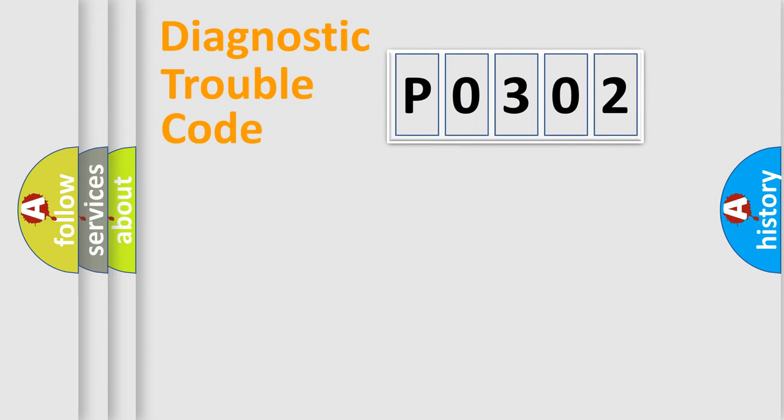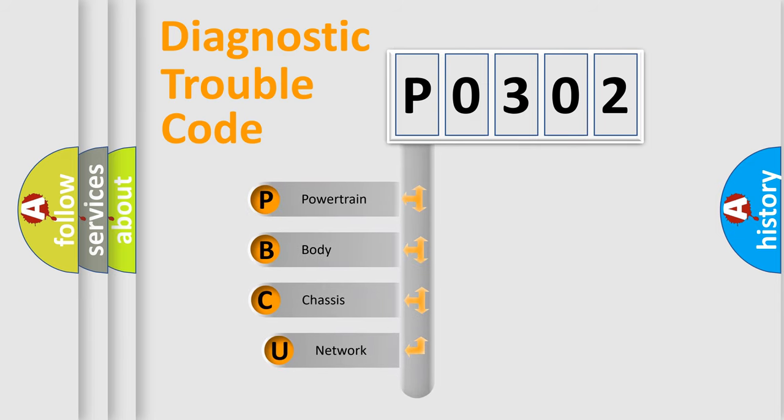Today we will find answers to these questions together. Let's do this. First, let's look at the history of diagnostic fault code composition according to the OBD2 protocol, which is unified for all automakers since 2000.